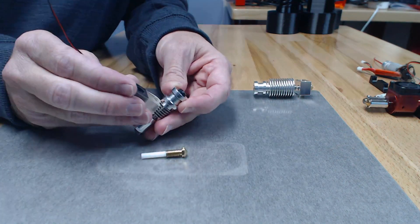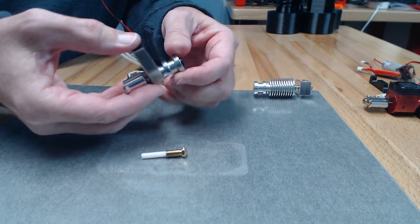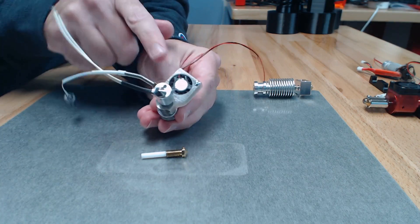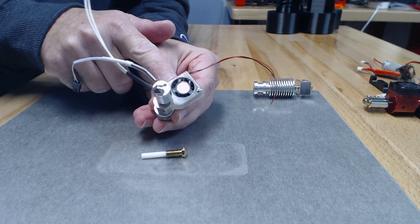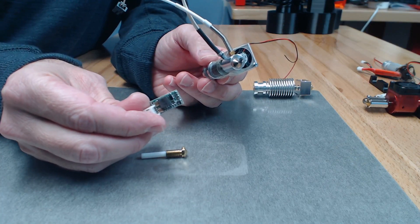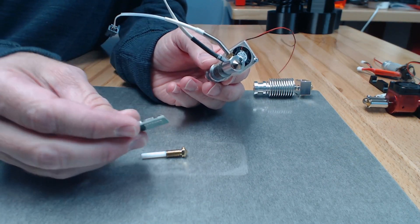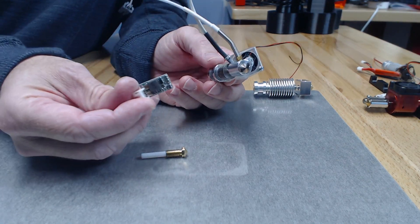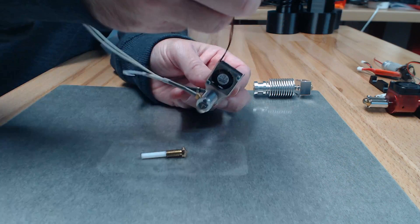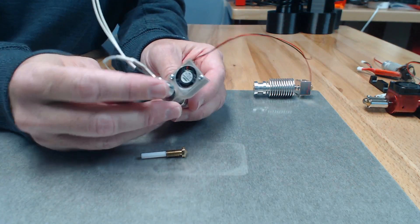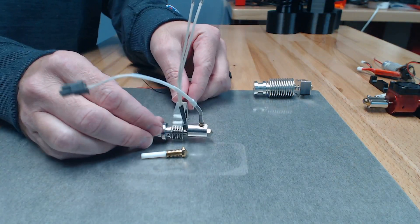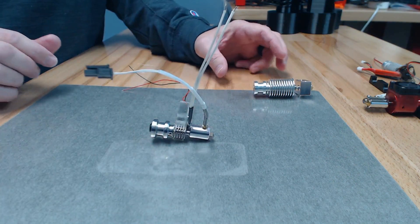Next you'll put on the fan shroud. Now if your printer does not have the ability to run a 5 volt fan, there is a little buck converter and that'll allow you to, if your printer is 12 volt or 24 volt, you'll use this buck converter to convert the fan over to 5 volts. So that is the complete Pico Hybrid.